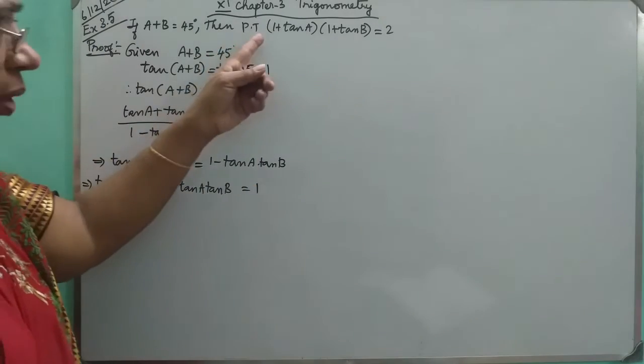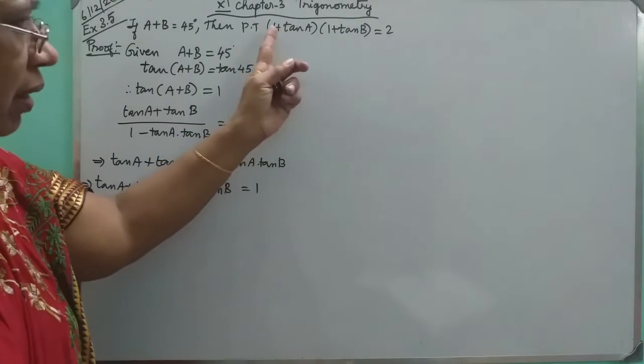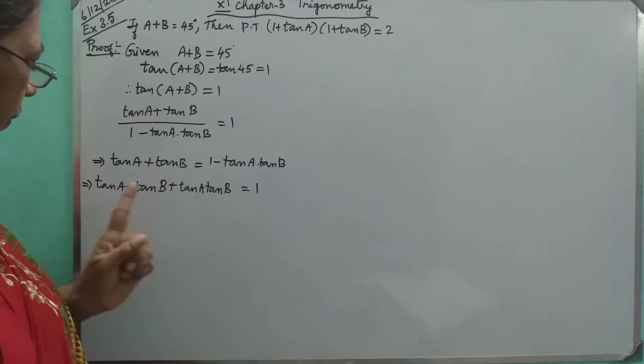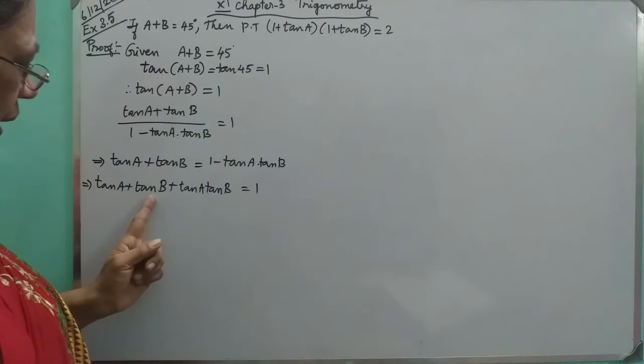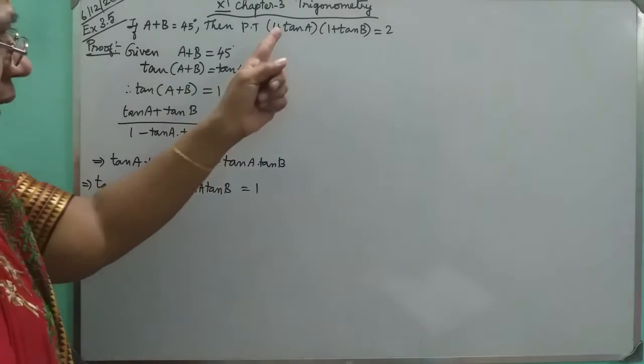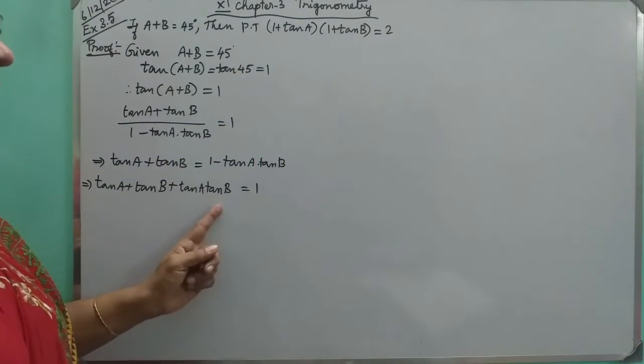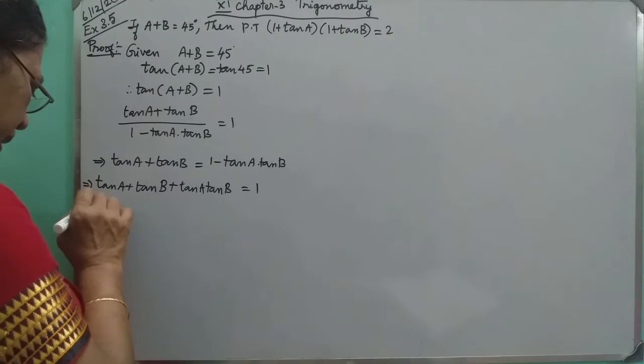But actually we require 1 plus tan A into 1 plus tan B. Let us multiply and see: 1 into 1, that 1 is here missing. Then 1 into tan B is here, tan A into 1 is here, tan A into tan B is also here. So which is missing? 1 is missing. So add 1 to both sides.